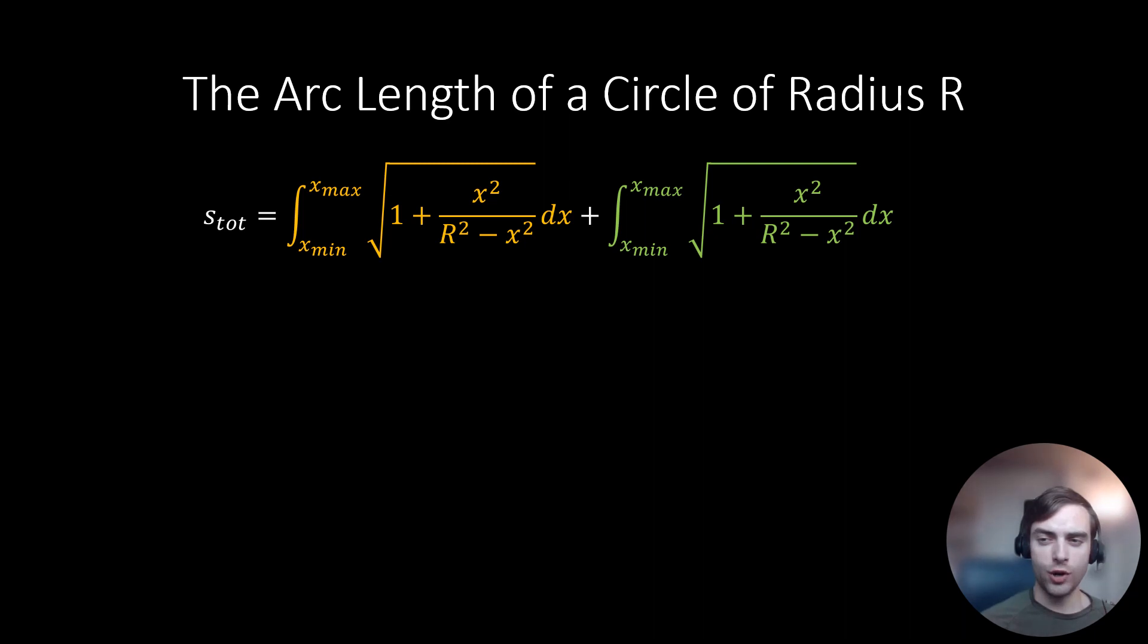So now since the arc lengths corresponding to the top and bottom parts of the circle are equal, suggesting a symmetry across the x-axis, we can now simplify accordingly.